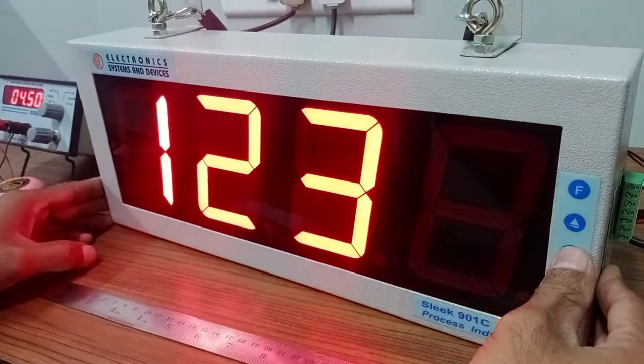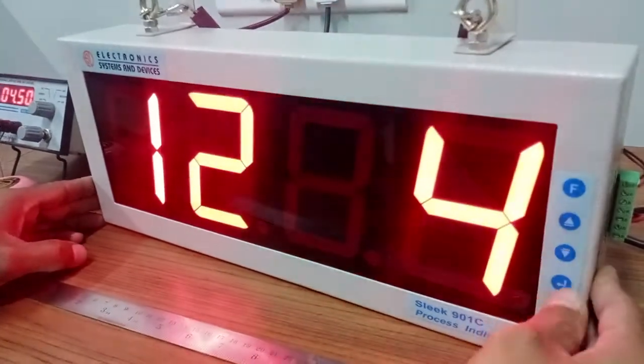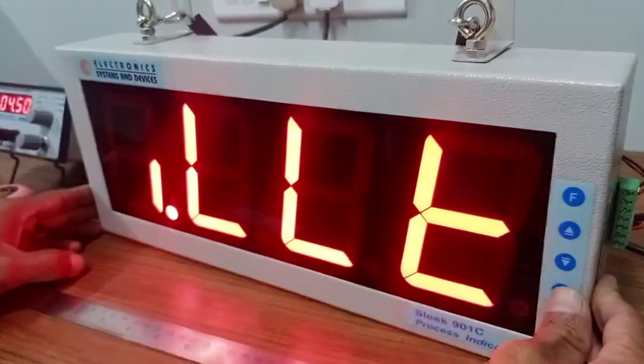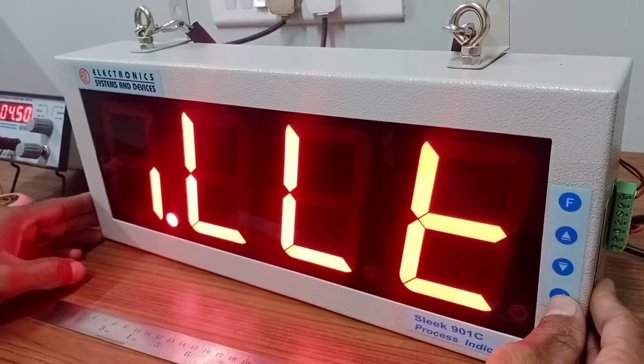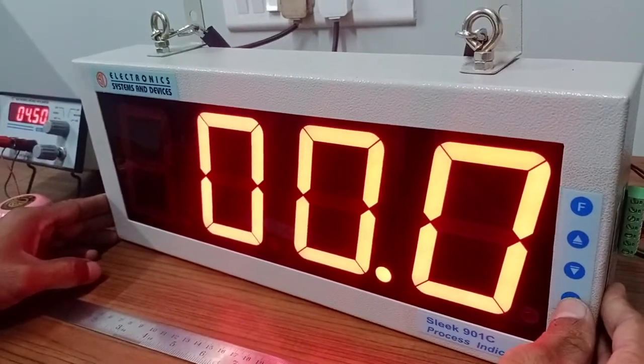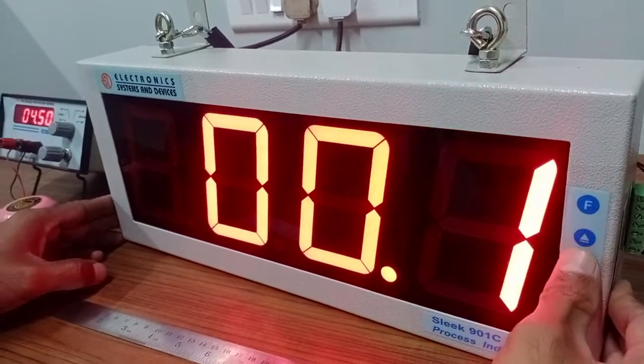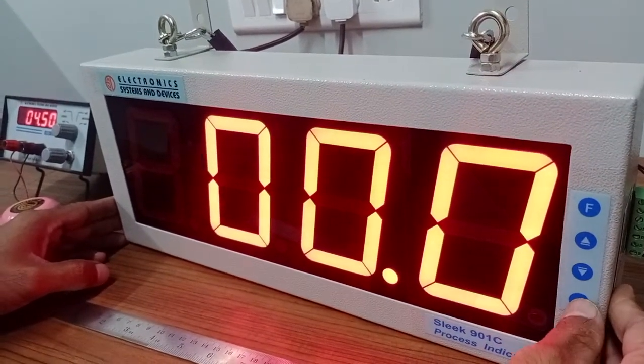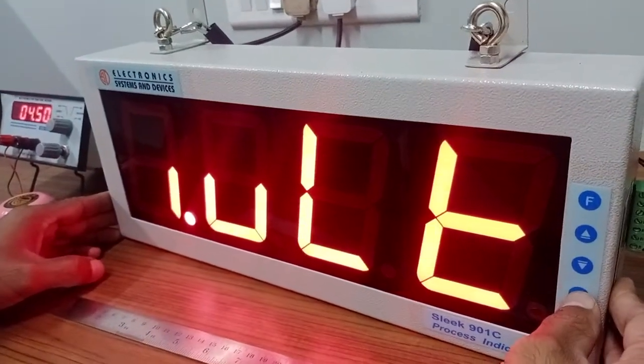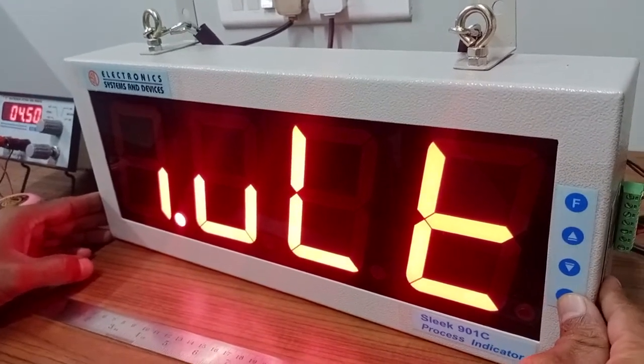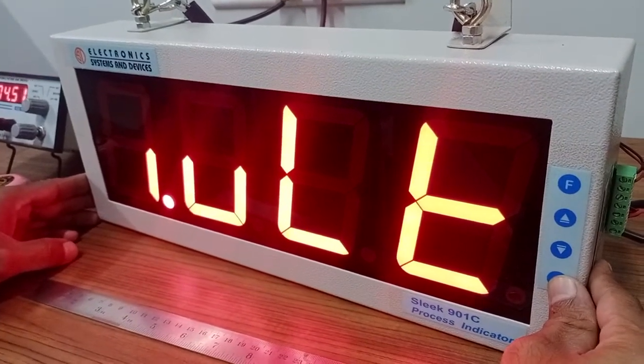Enter. This is input lower limit, so 4 milliampere, what it corresponds to, we have to feed it here. Right now we have kept it zero, you can change it. Enter. This is input upper limit, so 20 milliampere, whatever 20 milliampere corresponds to, you have to enter it here. We have kept it 1000, you can change it up to 9999.